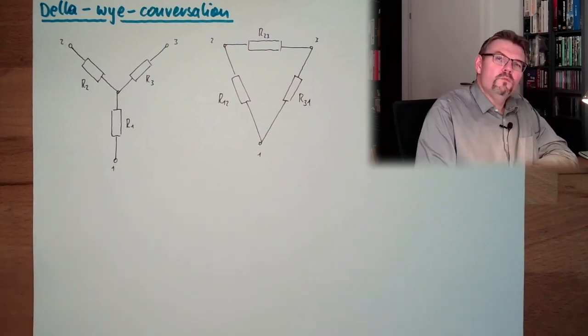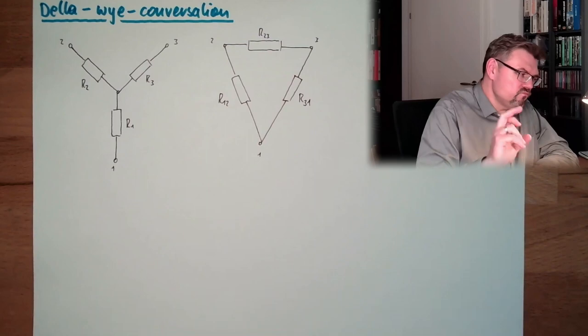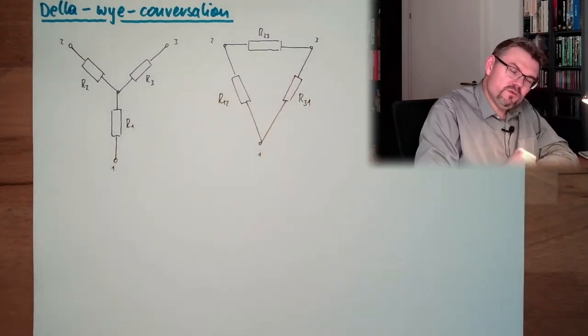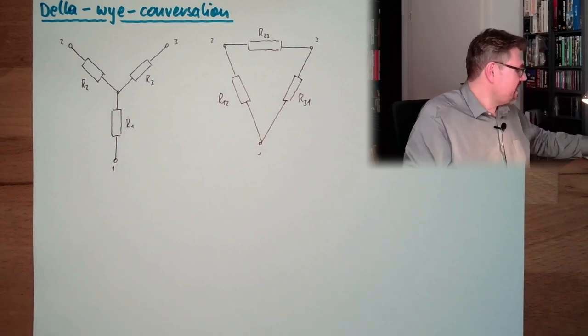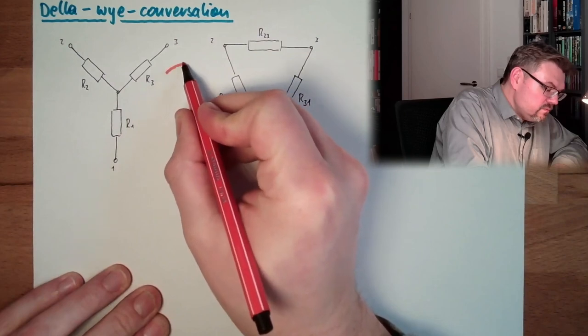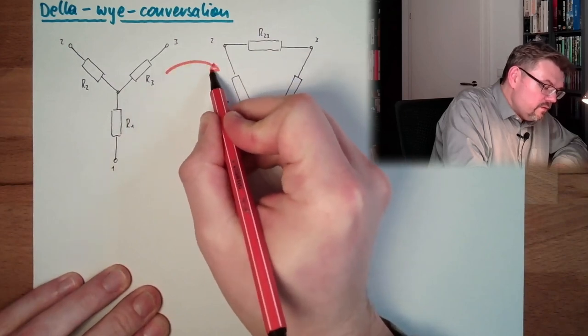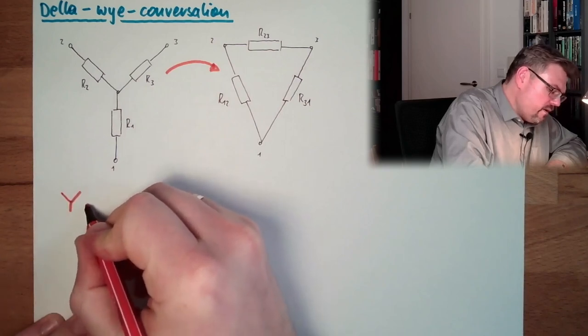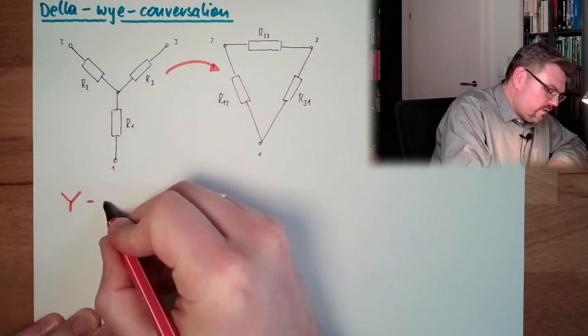Those two things we can transform into each other, convert into each other. So let's say we want to get from here to here, from Y to delta.